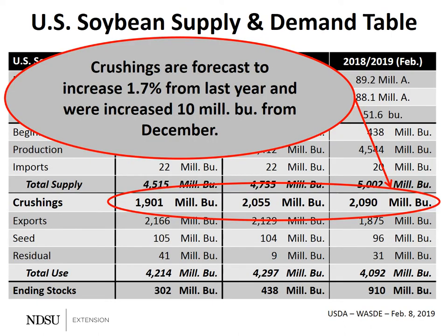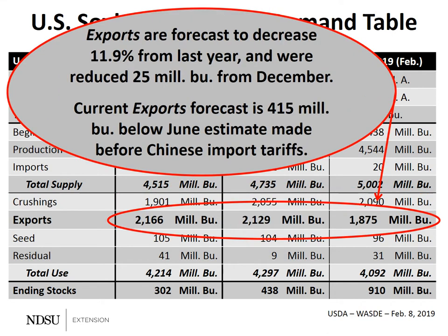Now let's focus in on the numbers. Crushings are forecast to increase about 1.7% from last year, and was increased about 10 million bushels from the December forecast. Exports are forecast to decrease approximately 12% from last year, and were reduced 25 million bushels from the December estimates. The current export forecast is about 415 million bushels below the June estimate that was made by USDA before the Chinese export tariffs were in place.